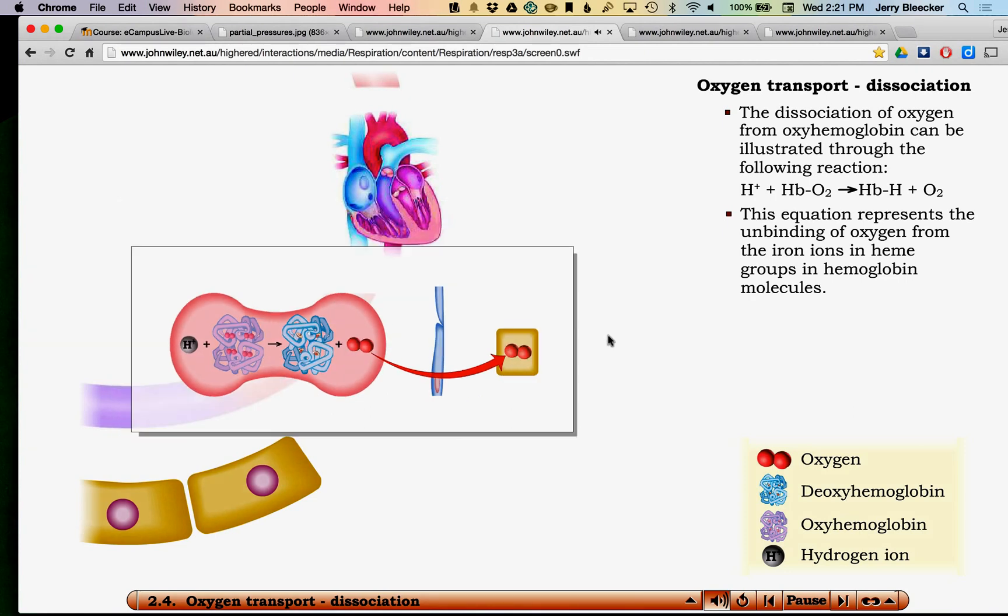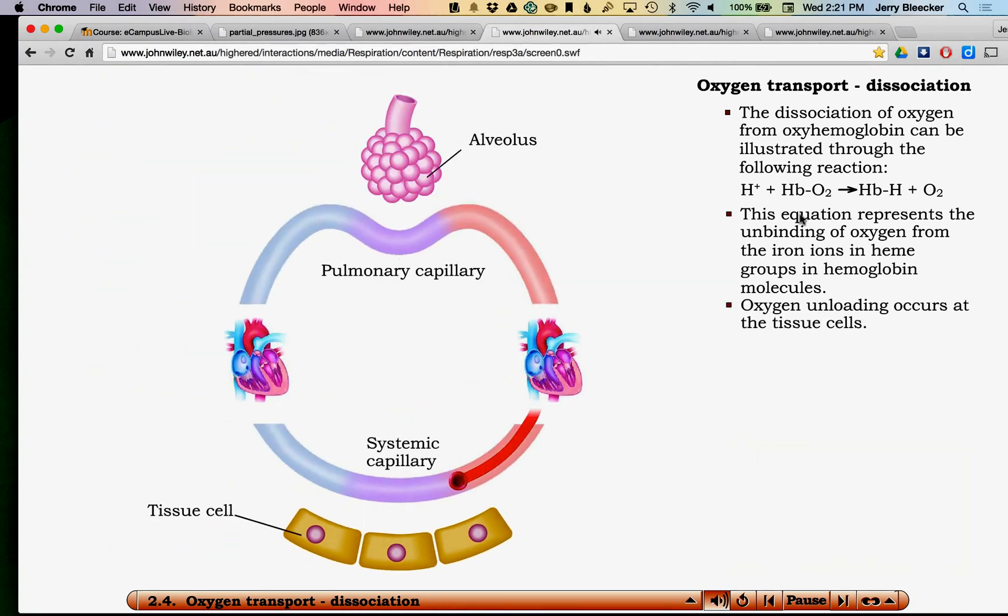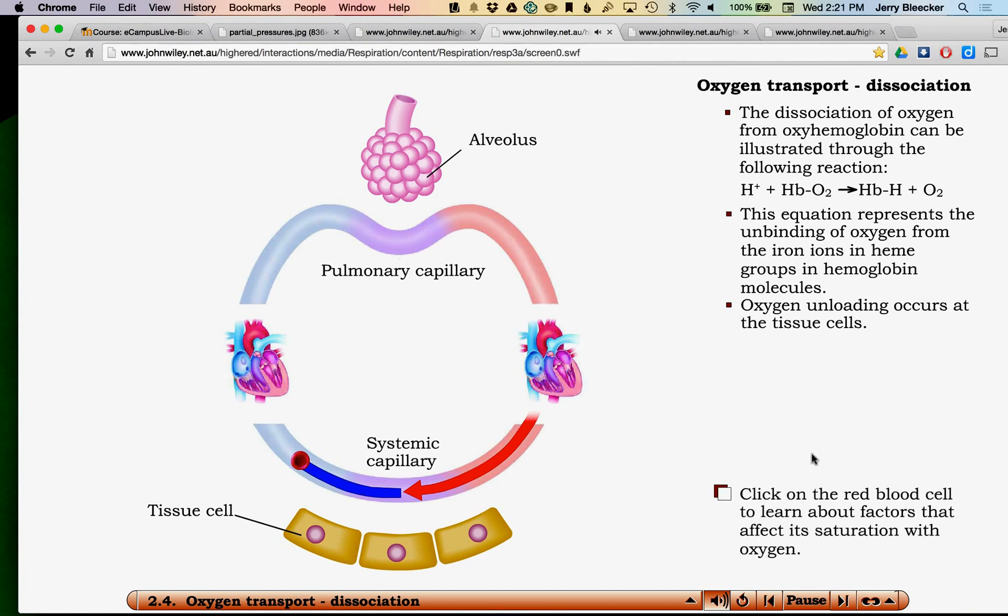Partial pressure sort of explained this. Oxyhemoglobin which is HBO2, that's what we call it, it's sort of interesting because you'll look like is that like a chemical formula? No it just means that hemoglobin is oxygenated. But what will happen is that hemoglobin once oxygen dissociates from it will associate with hydrogen ions and what we'll get is what's called deoxyhemoglobin, so it's a little bit more tired.